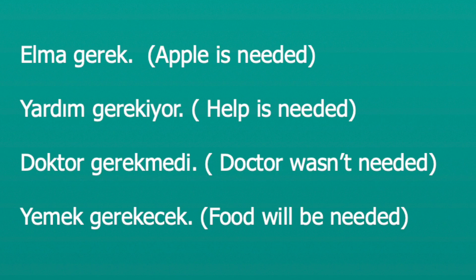Let's look at examples: 'Elma gerek' — an apple is needed. For instance, 'gelmem gerek' — I need to come. The structure is the same: noun plus gerekmek verb. So you just add any noun, then gerekmek after it. For example: 'Yardım gerekiyor' — help is needed. 'Doktor gerekmedi' — a doctor wasn't needed. 'Yemek gerekecek' — food will be needed. This is the easier form — you just add the noun, but the idea is the same.